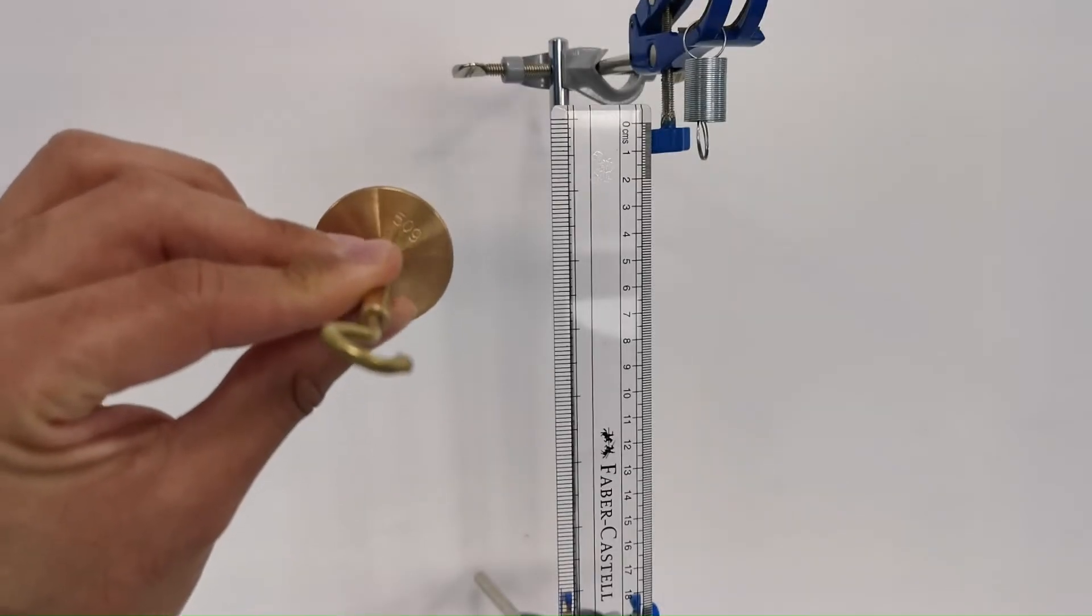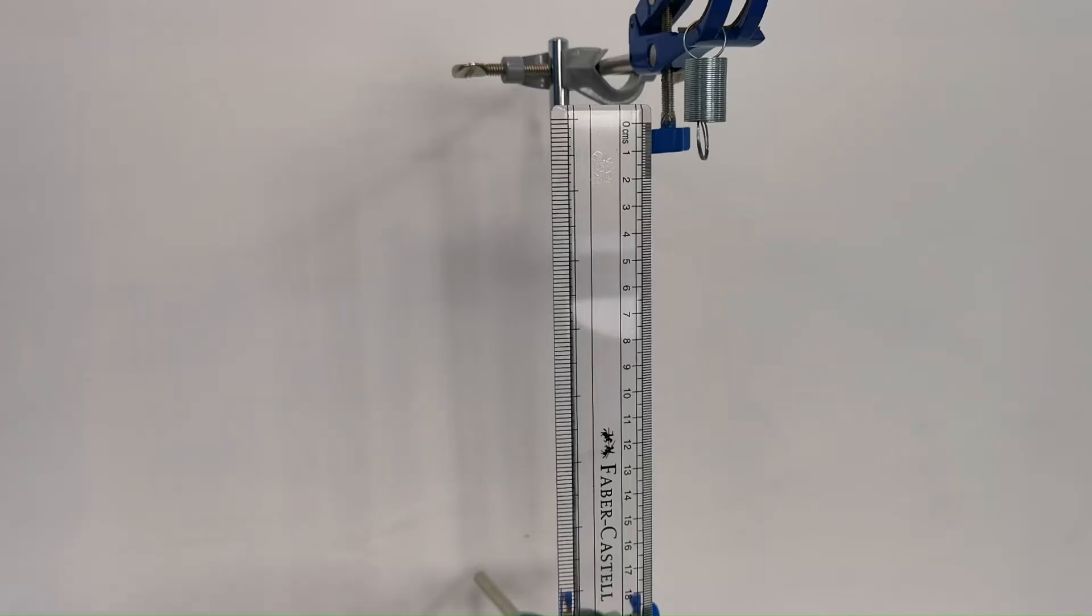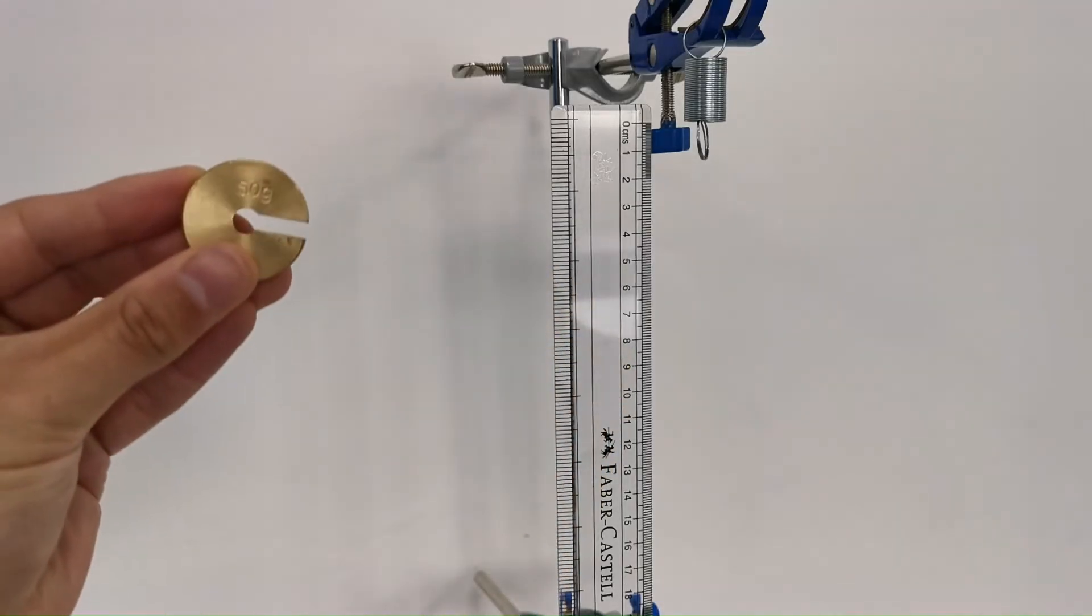The mass hanger and masses we are using today each have a mass of 50 grams, which we will need to convert to kilograms for our calculations. So 50 grams is 0.05 kilograms.